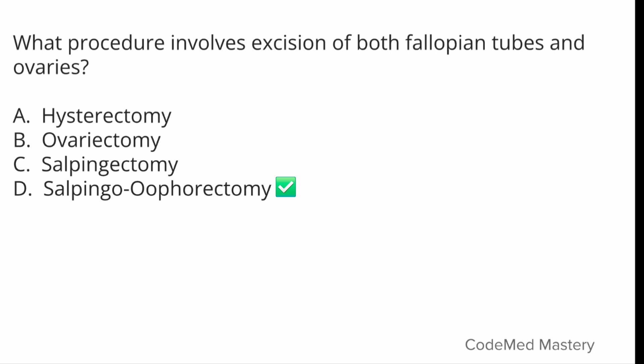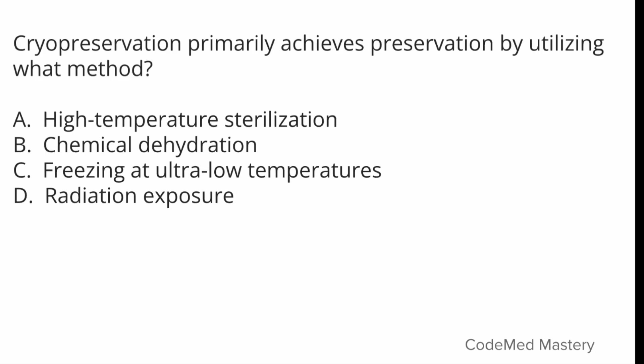Please make a note of all these terms — they are very important. Next question: cryopreservation primarily achieves preservation by utilizing what method? Option A: High temperature sterilization, Option B: Chemical dehydration, Option C: Freezing at ultra-low temperatures, Option D: Radiation exposure. The right answer is Option C: freezing at ultra-low temperatures. Cryopreservation is the process of preserving cells and tissues by cooling them to very low temperatures, typically using liquid nitrogen.